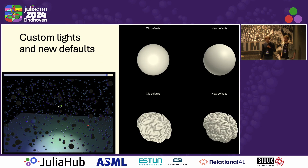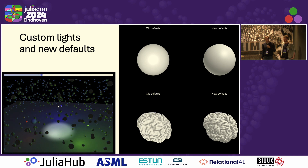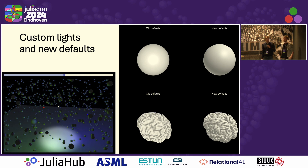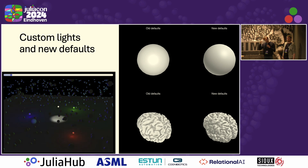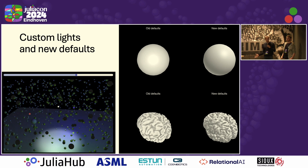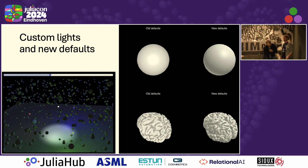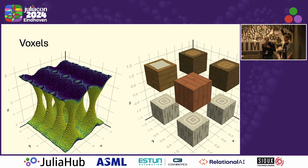Frederick added quite a lot of nice lighting support to GLMaki — you can see it there. Now you can have multiple lights with new and better defaults, and the whole lighting system has been cleaned up. Frederick also introduced a new voxel plot type where you can plot billions of little cubes, which can be used for serious big data visualizations — or for games, I guess, like Minecraft.